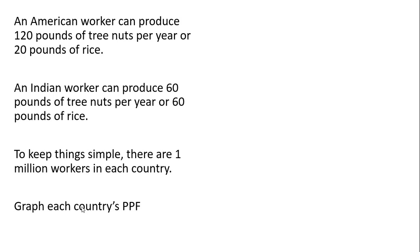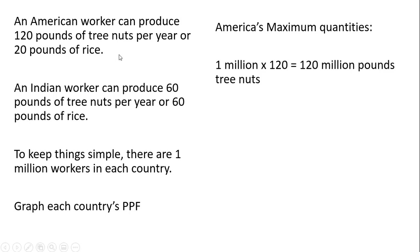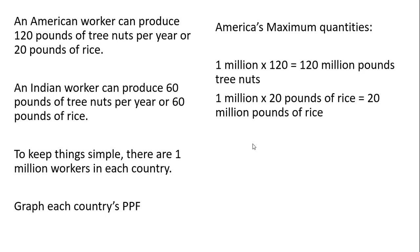To graph each country's production possibilities frontier, I'm going to find the maximum quantity of each good that can be produced in each country. In America, if a worker spent their entire time producing just tree nuts, that worker could produce 120 pounds. So if all one million workers produce tree nuts, the maximum quantity would be one million times 120, or 120 million pounds of tree nuts. On the other hand, if all workers produce nothing but rice, given that each worker produces 20 pounds, 20 pounds times one million workers gives us 20 million pounds of rice.